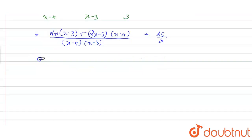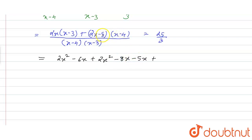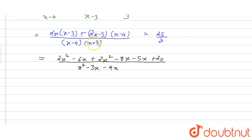Solving this, we get 2x into x is 2x squared minus 6x, plus 2x squared, and 2x into minus 4 is minus 8x, minus 5x plus 20. Multiplying the denominator terms: x into x is x squared, x into minus 3 is minus 3x, minus 4 into x is minus 4x, and minus 4 into minus 3 is plus 12, giving plus 12, equal to 25 by 3.